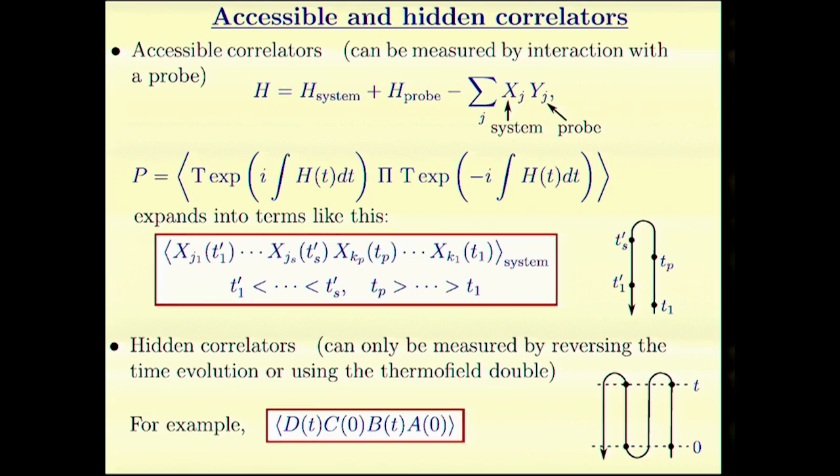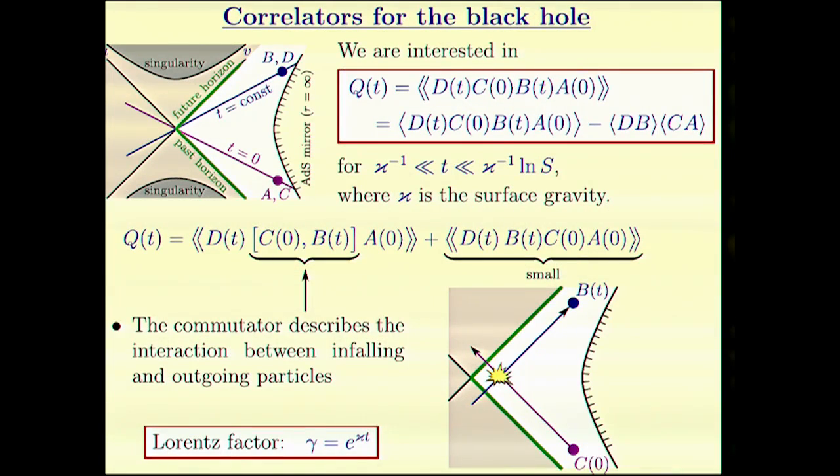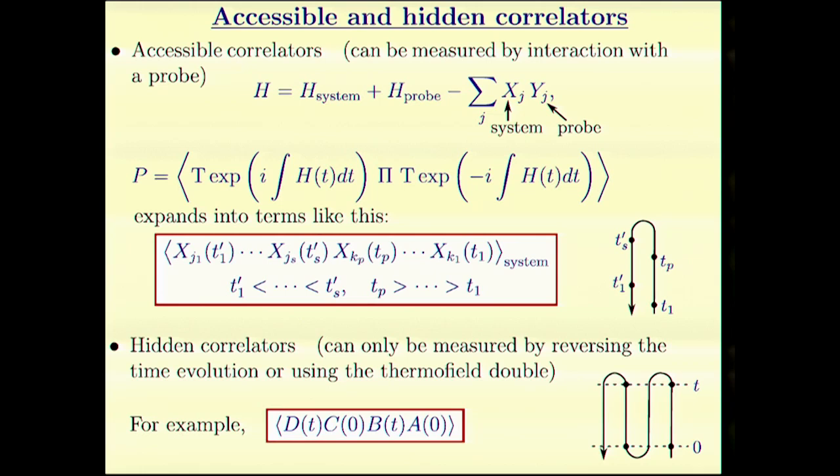However, if we consider hidden correlators, this is a typical example. The time goes up, down, up, and down several times. The simplest correlator is this. Then we have a chance to distinguish the black hole from other systems.